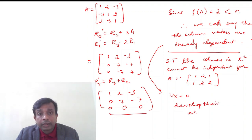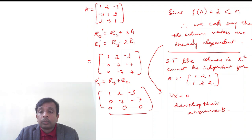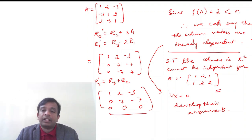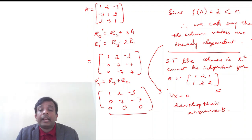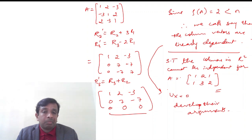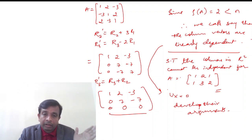I also have a small exercise for viewers: show that the columns in R2 — vectors (1,1), (2,3), and (1,2) — cannot be independent for the given 2×3 matrix A. The hint is to use the rank. Please solve it and develop your arguments. Thank you — we will come back with more concepts and problems. Videos are kept intentionally short so that difficult concepts can be viewed without scrolling through long content. Happy watching and happy learning.